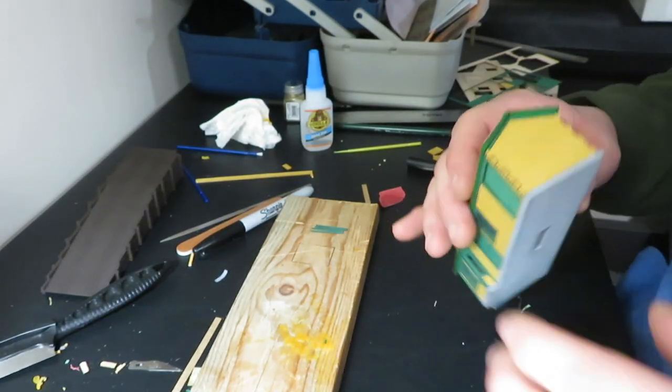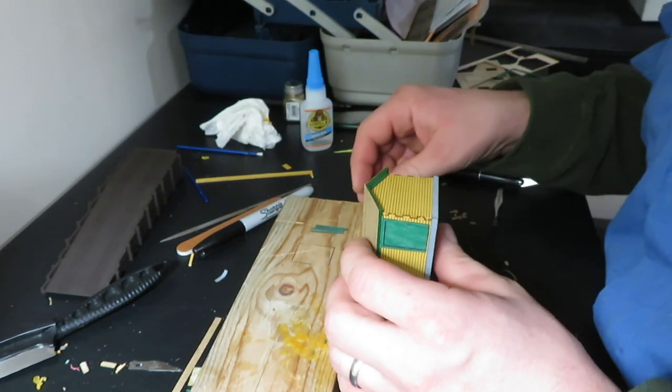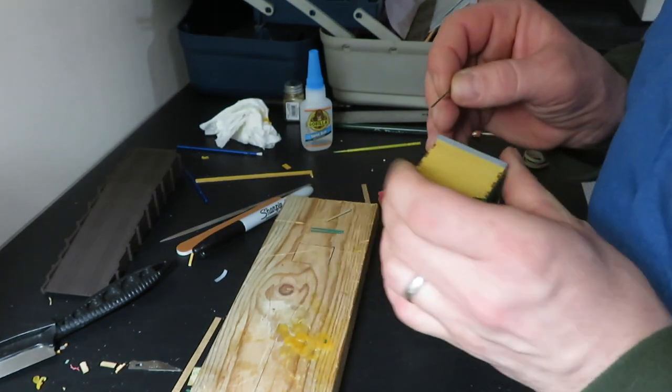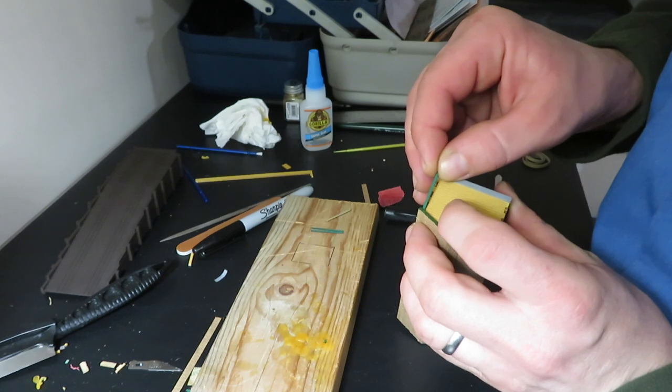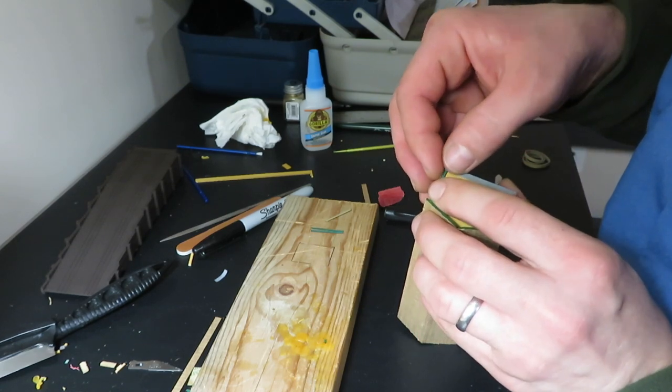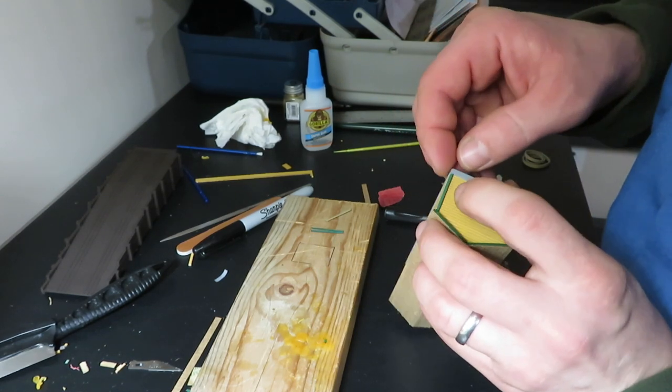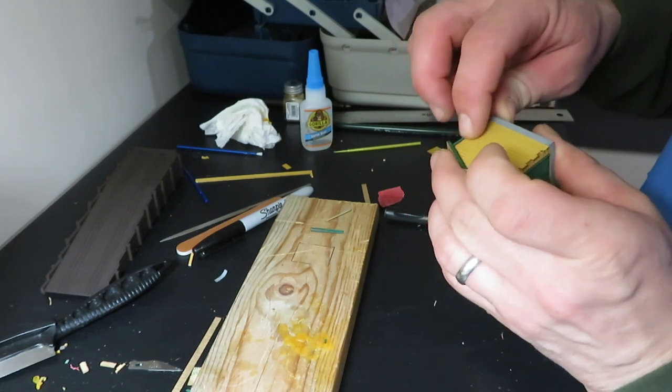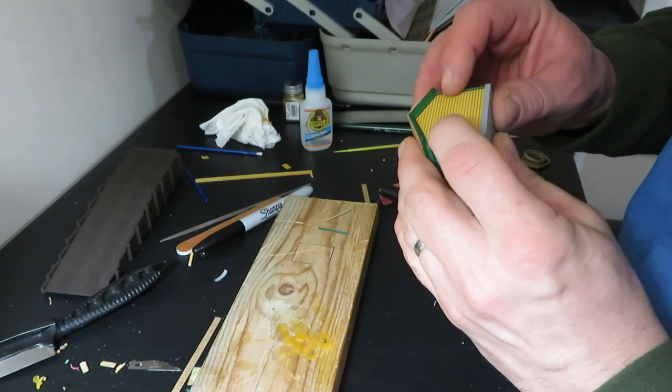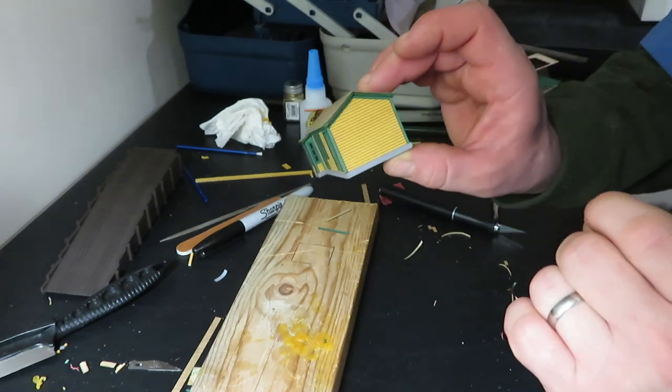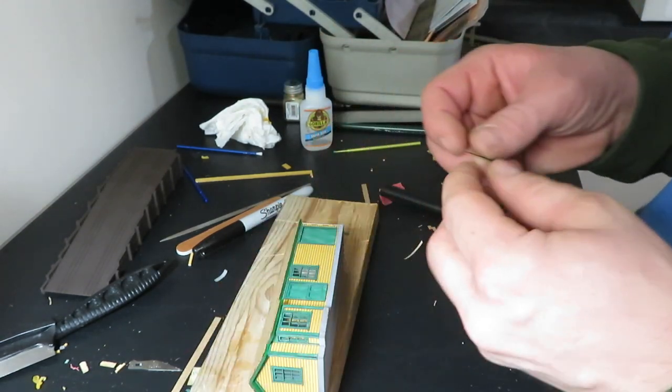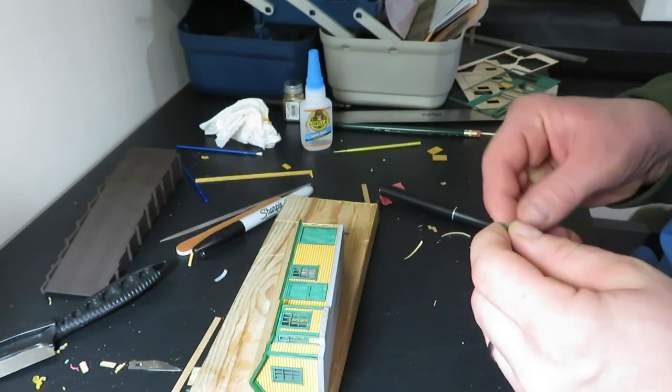The remaining trim pieces are all peel and stick. So we'll work on those now. I really like this peel and stick trim. The other thing I really like about this kit is how precise everything goes together. All right, so that's the end. Now we got to do this front and rear facing areas.